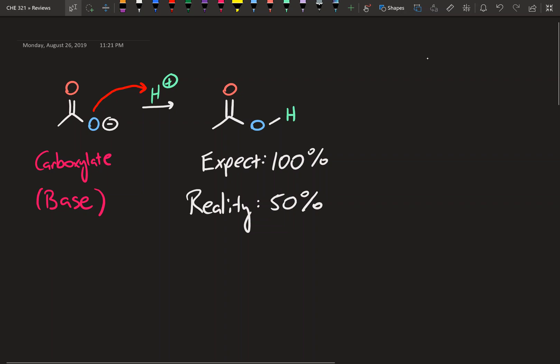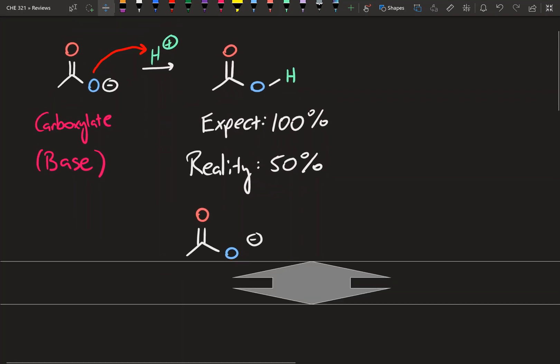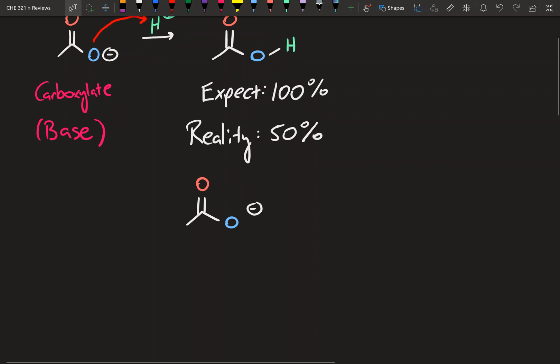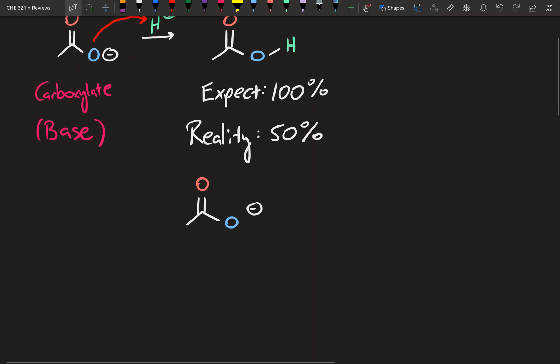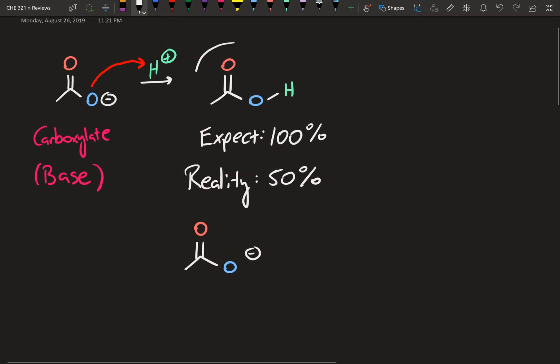Well it's got to do with resonance. I mean you guessed it, right? Title of the video. So we redraw our structure here. Think about what resonance is. Resonance allows us to essentially show the flow of electrons between structures. So where we expect this to be our product 100% of the time, we only get it 50% of the time.